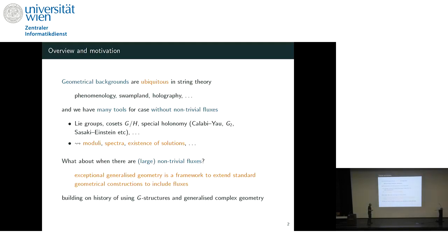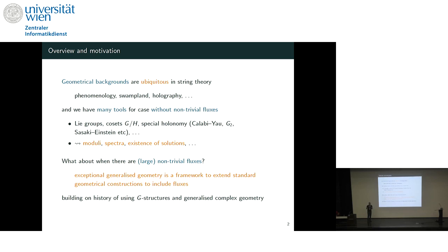I'm going to start with some probably superfluous motivation. Geometrical backgrounds are ubiquitous in string theory — they're important for phenomenology, for the swampland, for holography. In the case when we have no non-trivial fluxes, we have many tools for thinking about that geometry: it might be a Lie group, a coset space, a special holonomy, a Calabi-Yau manifold, a G2 manifold, or Sasaki-Einstein in the case of holography.